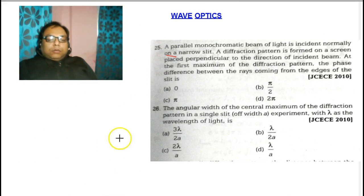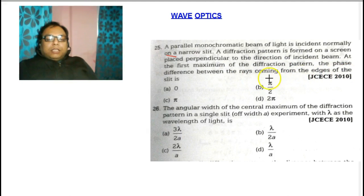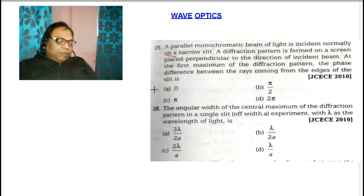Question number 25. A parallel monochromatic beam of light is incident normally on a narrow slit. A diffraction pattern is formed on a screen placed perpendicular to the direction of the incident beam. At the first minima of the diffraction pattern, the phase difference between the rays coming from the edges of the slit is — we have to calculate the phase difference.